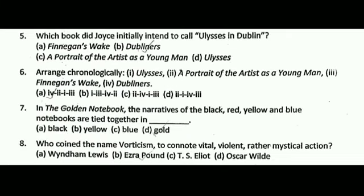Next question: which book did Joyce initially intend to call Ulysses in Dublin? The correct answer is B, that is Dubliners.